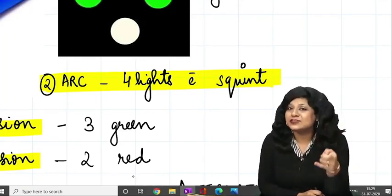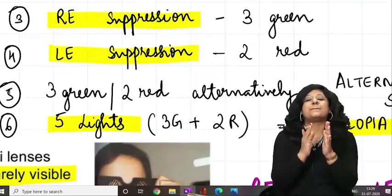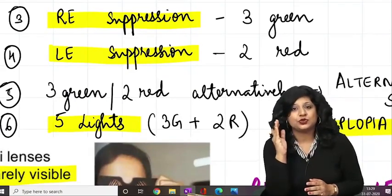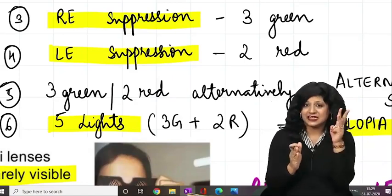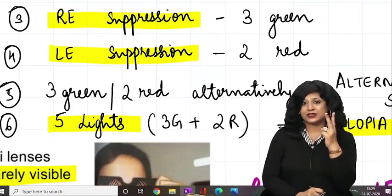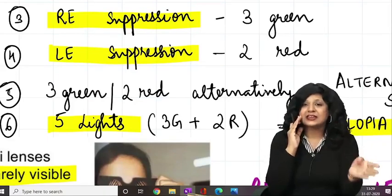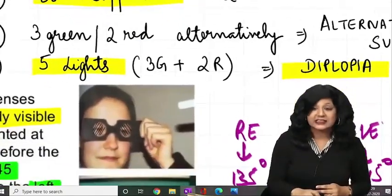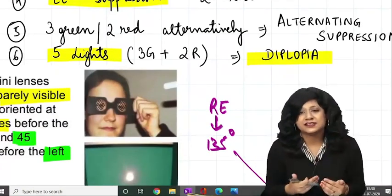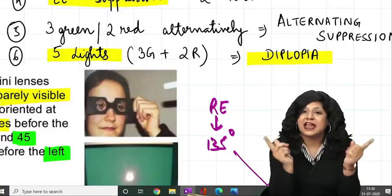In this case, the examiner is telling you indirectly that fundus is normal and anterior segment is normal. There are other possibilities such as suppression. Right eye suppression means the patient won't see red — they'll see three green. Left eye suppression means they won't see green — they'll see two red. If they see alternately three green and two red, that's alternating suppression. If they see all five lights — two red and three green — that means diplopia.